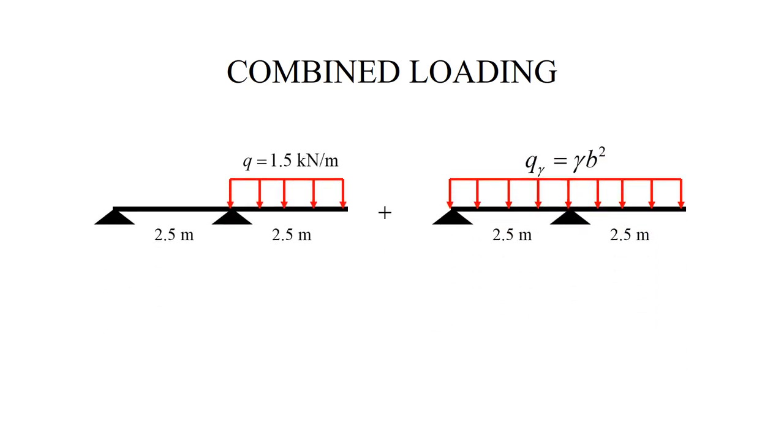Now, we would like to combine two loadings, so that we have the load due to the service conditions, and the load due to the weight equal to gamma b squared. As a result, we obtain a beam that is loaded by two uniform loads. One is Q gamma on the left part, and the other is Q plus Q gamma.